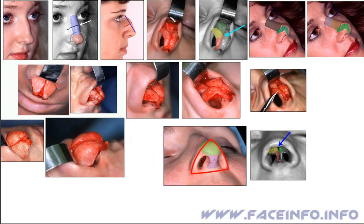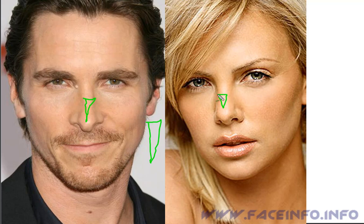The form and shape of the upper lateral nasal cartilages have a great impact on the nose shape. For example, Christian Bale's cartilages are long, so his nose is longer. While Charlize Theron's are shorter, and her nose is smaller and shorter.